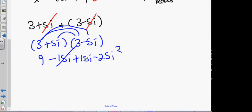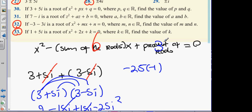15i is, as predicted, cancelled. Now, what's minus 25i squared? Plus 25. 25 plus 9? 34. So, guys, the answer there would be 34. So, the answer is going to be x squared minus 6x plus 34 equals 0. Is that okay?